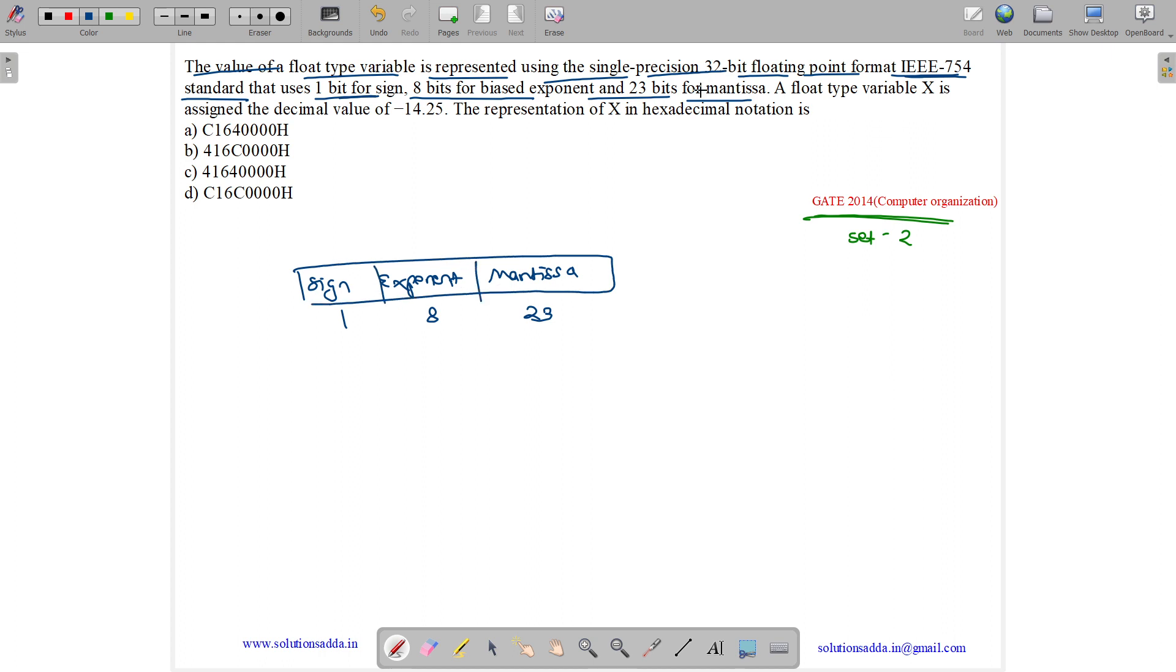The float type variable X is assigned to the decimal value minus 14.25. So minus 14.25 needs to be represented. The representation of X in hexadecimal notation is, so we need to find the representation for X.